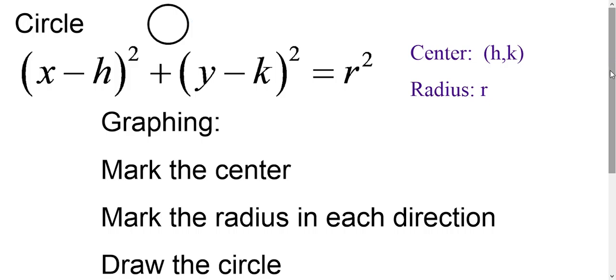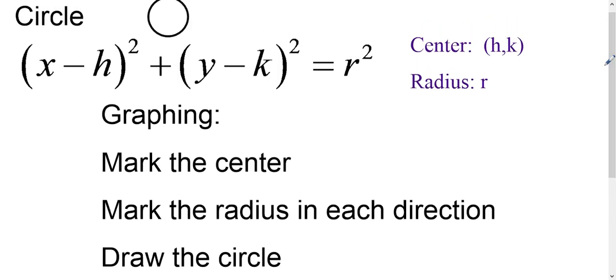So when it comes to graphing, you're first going to mark the center, which is h k. And you will mark the radius in each direction. So you're going to go however far the radius is from the center to the right, to the left, up, and down. And then you can draw the circle just connecting those points.